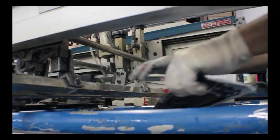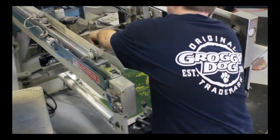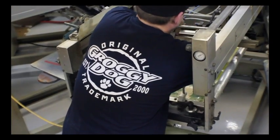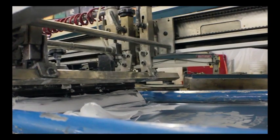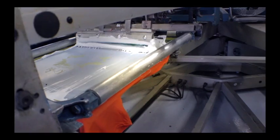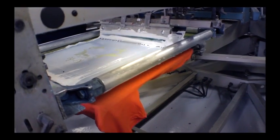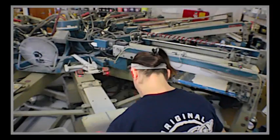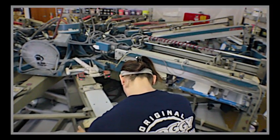Flood bars, squeegees, and ink are then loaded, and a sample print is created so that the necessary modifications can be made. Once the design is correctly registered, the printing process begins.